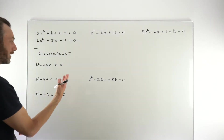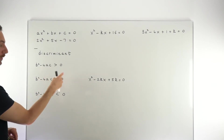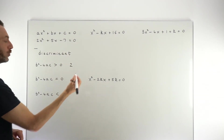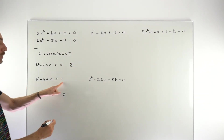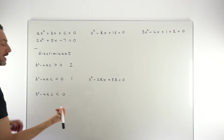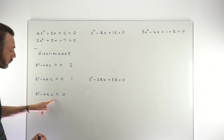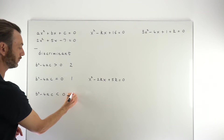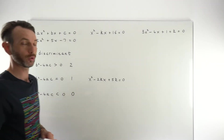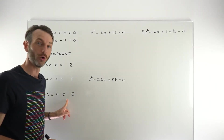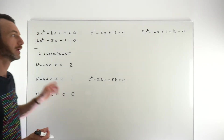If the discriminant is greater than zero, the quadratic has two solutions or two roots. If the discriminant equals zero, it has one solution or one real root. If the discriminant is negative, there are no real solutions — though there would be complex or imaginary number solutions in that case.